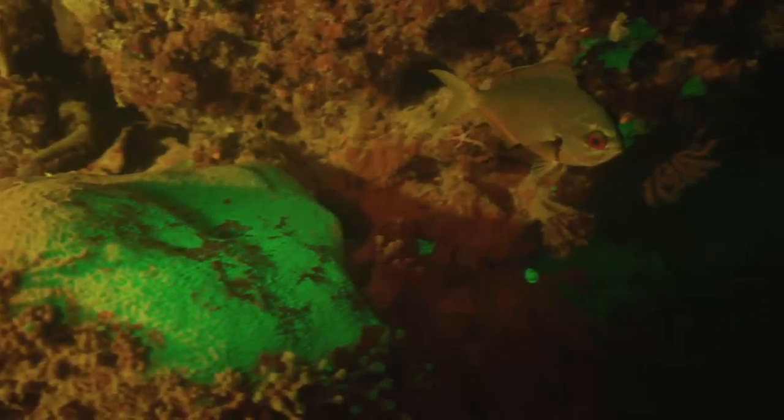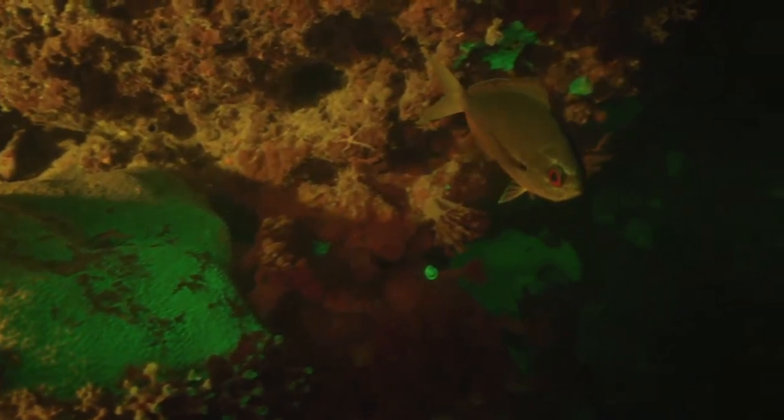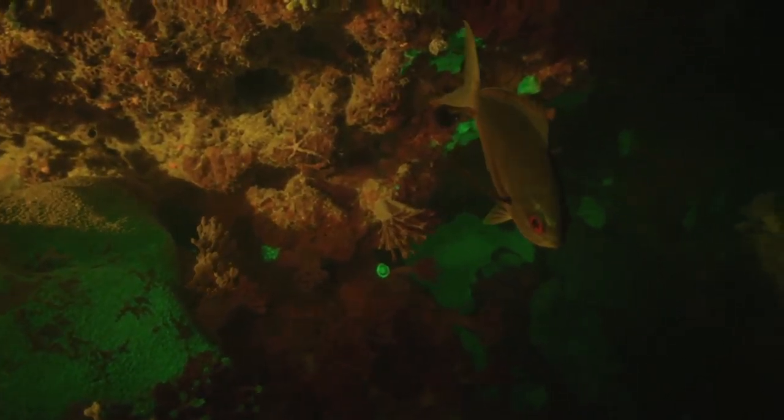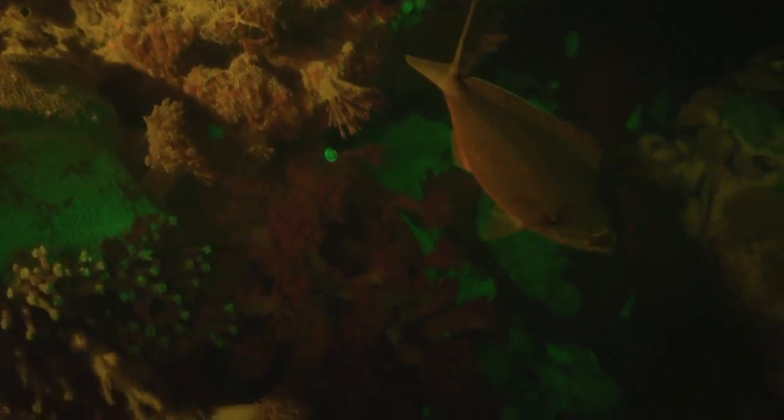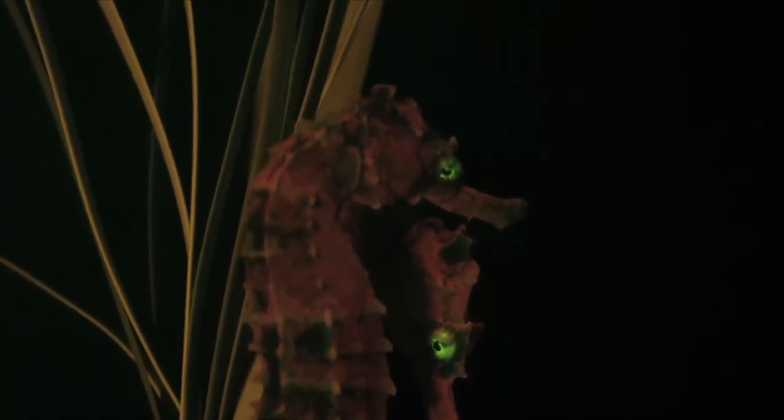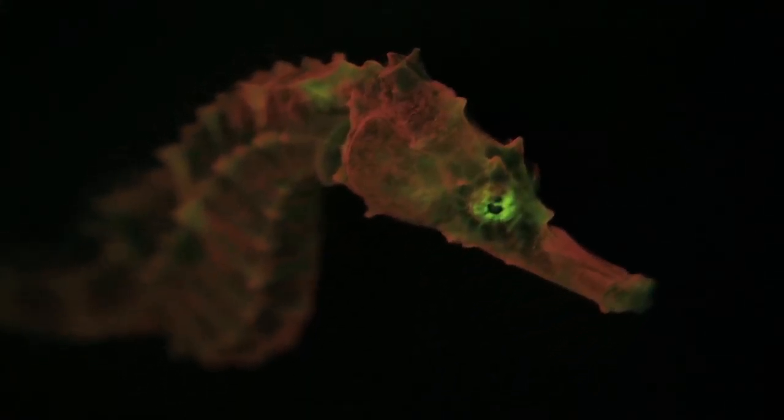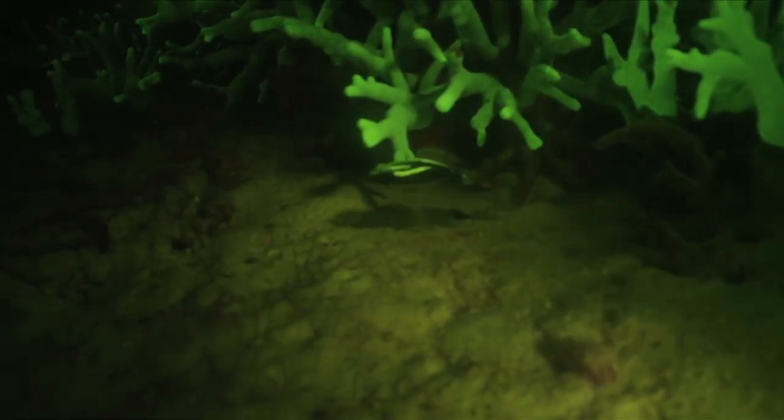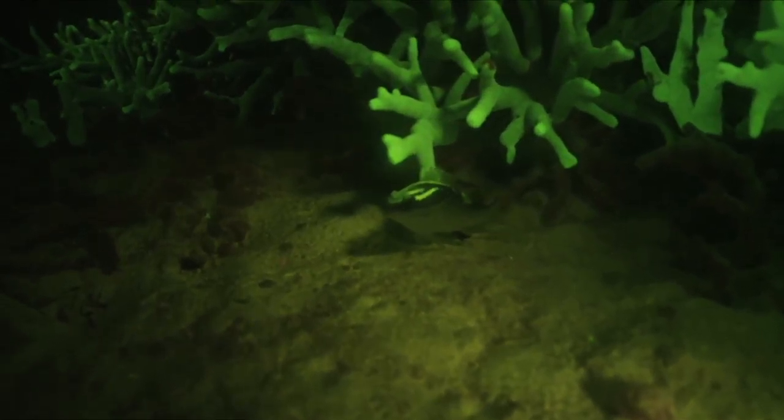We know that biofluorescence probably functions in mating behavior, communication within a species. So species are somehow identifying each other, potentially using fluorescent patterns, which is quite novel. We have to put ourselves in the position of the fish and what they can see. And some of these patterns may actually act to make the fish very difficult to see for other fish.